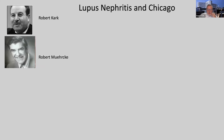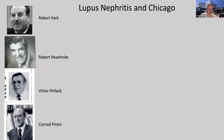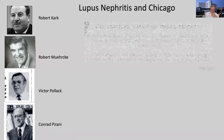I want to give you this background of lupus nephritis in Chicago, because I think it's really important to understand the history. There were four huge players going way back: Dr. Kark, Dr. Murky, Dr. Pollack, and Dr. Conrad Perrani. Rush really wasn't its own institution back then — these were mostly physicians and pathologists at the University of Illinois, also associated with Presbyterian Hospital. Eventually Presbyterian became its own entity: Rush Presbyterian Medical Center.